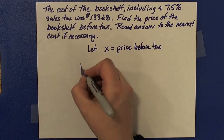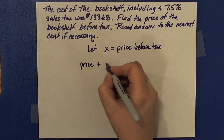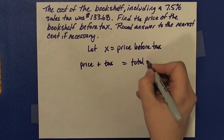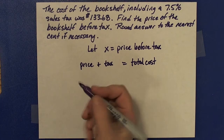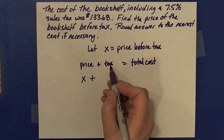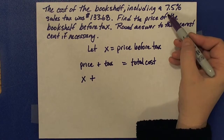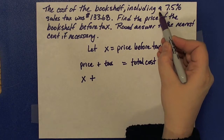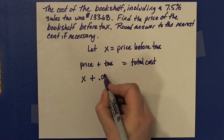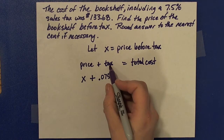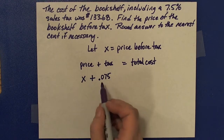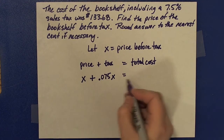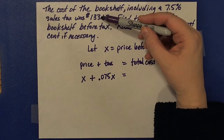If I have an item, I have its price, plus I have the tax, and that all adds up to the total cost. In this case, my price is x. The tax is always applied to your price, so it's applied to x. I know it's 7.5%, and when using a percent in an equation I change it to decimal form by moving the decimal two places to the left, making it 0.075. So the tax is 0.075 times x, and that equals my total cost of $133.68.